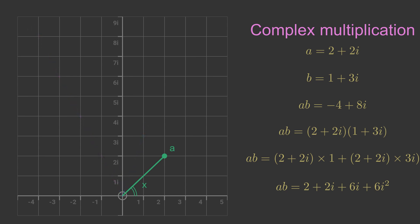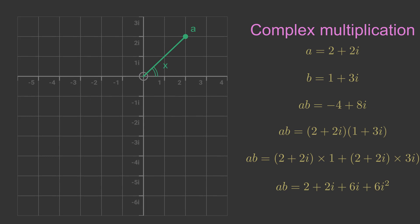We can repeat this with a different complex number, c equals minus 2 minus i, just to check if we get the same result. We will multiply by the same value a. This time again the same thing happens. Multiplying by a has the effect of rotating c by the angle of a.